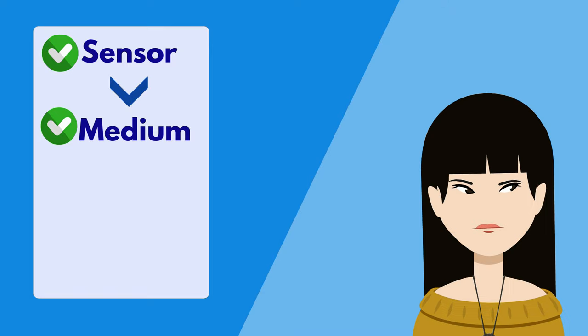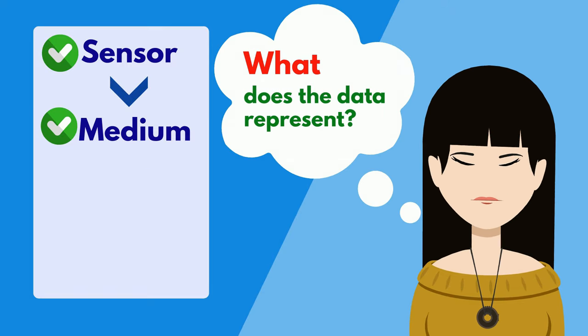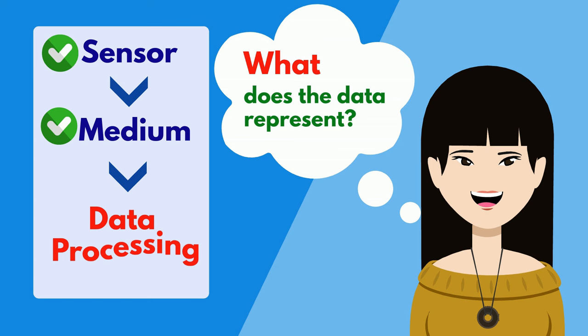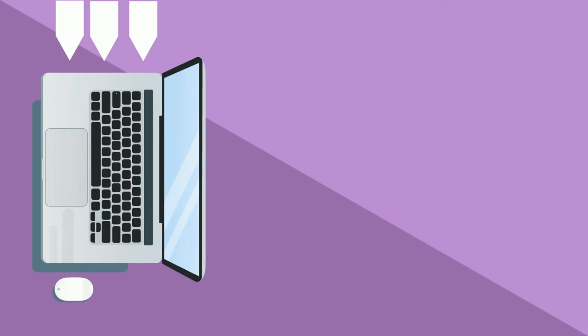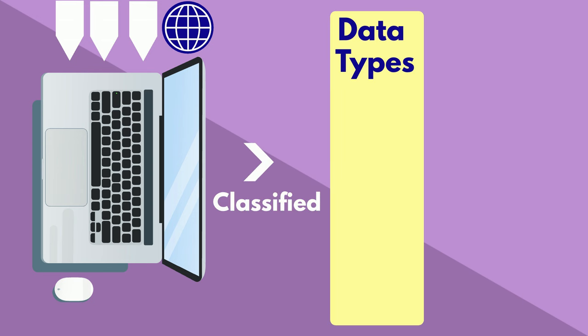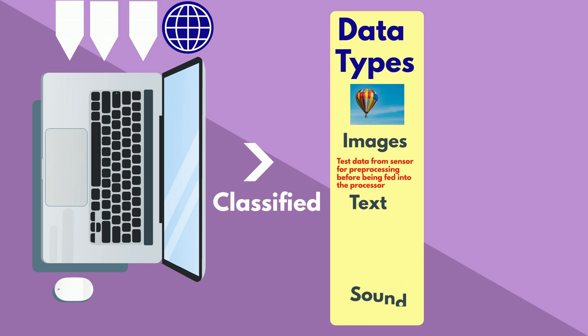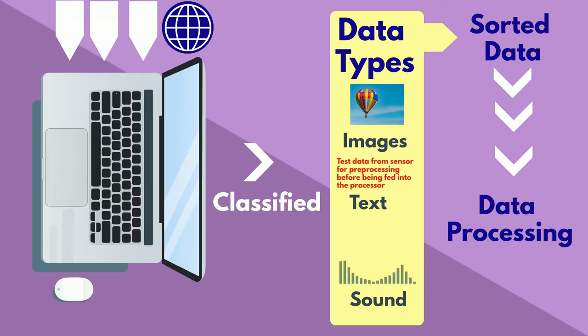And now that the data has been generated from the sensor and sent through our medium, it's time to figure out what the data actually represents. In other words, it's time for data processing. Basically, once the data is fed into our system through the medium of exchange, it is classified into one or more data types based on its nature like images, texts, or sound. This arranged and sorted data is now ready for processing.